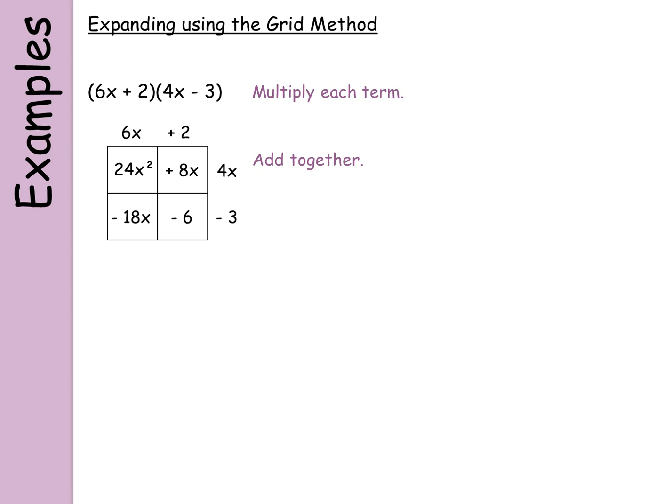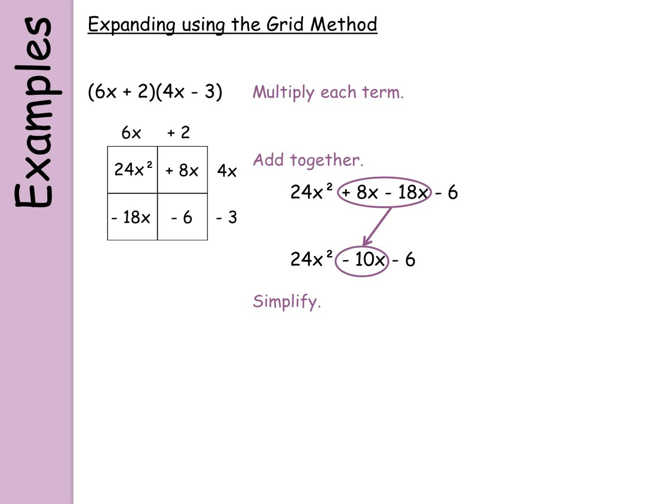As before, add everything together: 24x squared plus 8x minus 18x minus 6. To get minus 10x, I start on plus 8 and count down 18 steps on the number line — that gets me to minus 10. So the final answer is 24x squared minus 10x minus 6. That's how to expand quadratic expressions using the grid method. Once you've practised a few times you might steer away from it — it can be a little long-winded — but it's a really good method to start with until you've got the idea.